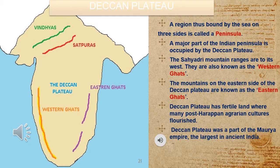The region between the east and west coast of India tapers off to the south, with the Arabian Sea to its west, the Indian Ocean to its south and the Bay of Bengal to its east. A region bound by the sea on three sides is called a peninsula. A major part of the Indian peninsula is occupied by the Deccan Plateau. The Sahyadri mountain ranges, also known as the Western Ghats, are to its west, and the Eastern Ghats are on the eastern side. The Deccan Plateau has fertile land where many post-Harappan agrarian cultures flourished, and it was also a part of the Maurya Empire, the largest in ancient India.